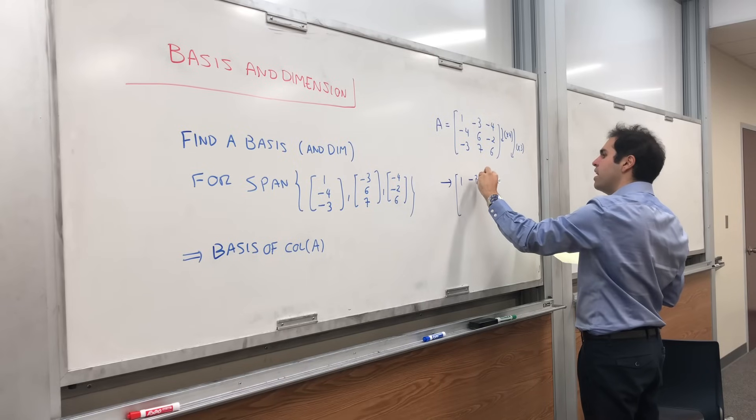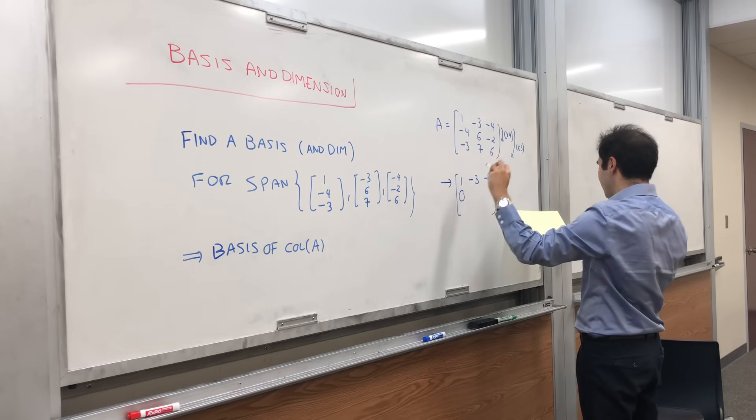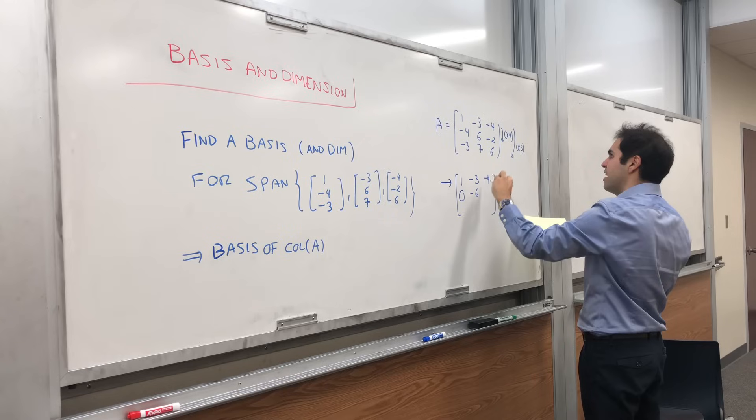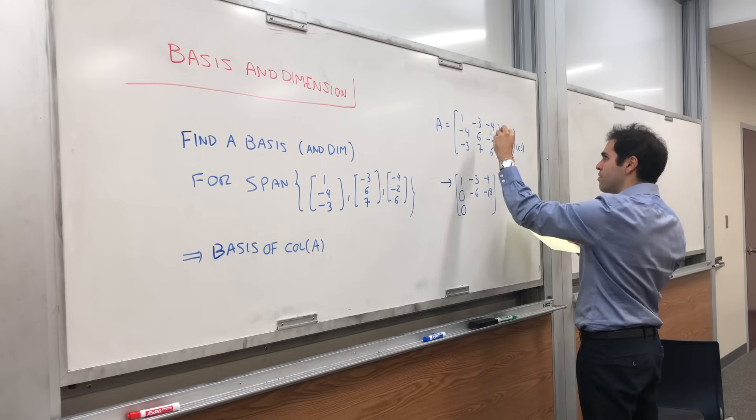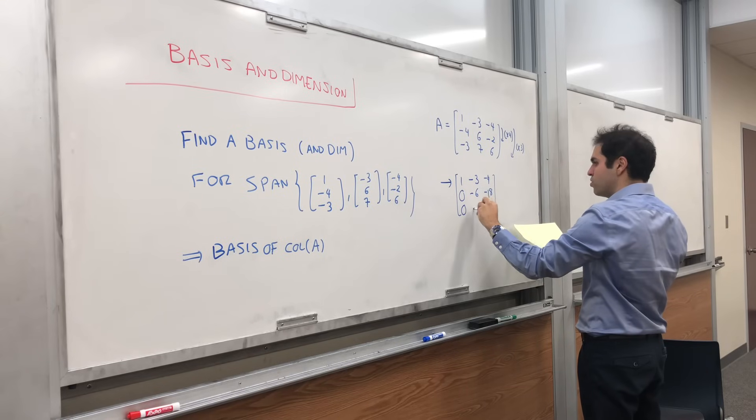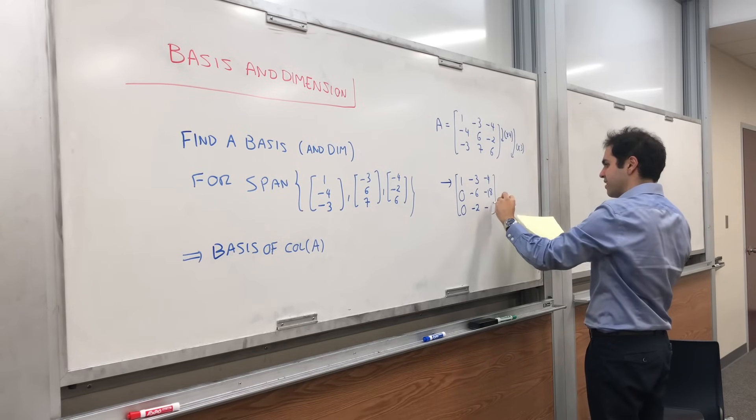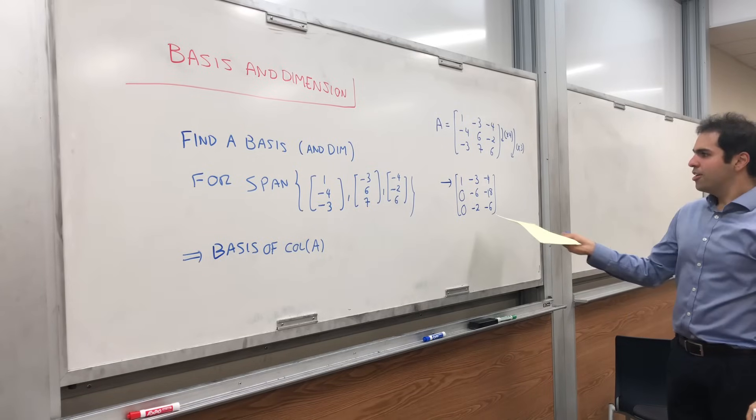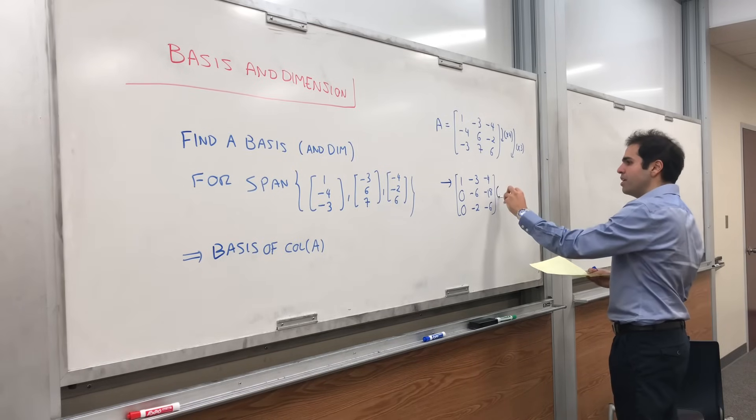Then you get [1, -3, -4], and then [0, -6, -18]. And here you get [0, -2, -6]. Before we continue, let's just simplify this a bit. Notice the second row is divisible by -6, and the third row is divisible by -2.